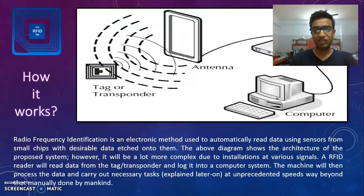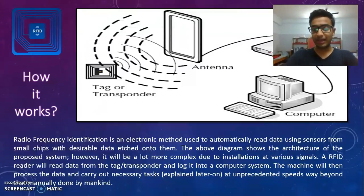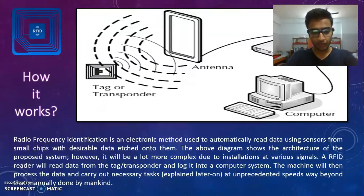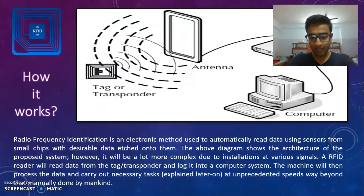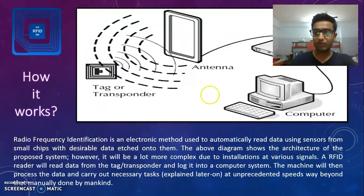The above shown picture is just a sample of one signal. An RFID reader will read data from the tag or transponder, and then transmit it to an interrogator or reader which will process the data from analog to digital signals. These digital signals will be read by the computer system and logged into a datasheet. The machine will then process the data and carry out necessary tasks, which are carried out at unprecedented speeds, way beyond what is manually done by mankind.